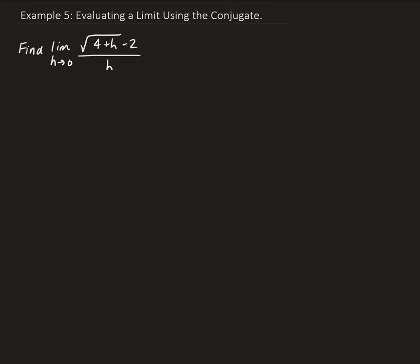In this example, we want to evaluate the limit of this function as h goes to 0. So let's first do a direct substitution to see what we get. Letting h equal to 0, we get square root of 4 plus 0 minus 2, all divided by 0. Square root of 4 gives us 2, so we have 2 minus 2 on top divided by 0 — this gives us 0 over 0, which is an indeterminate result.